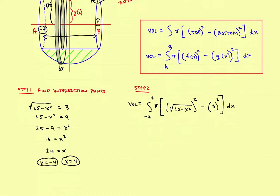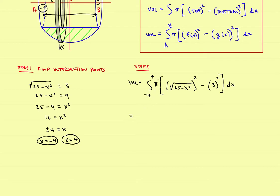Bring pi to the outside as a constant. So we have pi times the integral from negative 4 to 4. When you square the square root of 25 minus x squared, the square and square root cancel, leaving just 25 minus x squared. Then minus 3 squared is 9, so minus 9 dx. Subtracting 9 from 25 gives pi times the integral from negative 4 to 4 of 16 minus x squared dx.